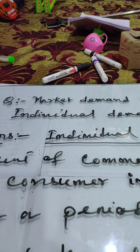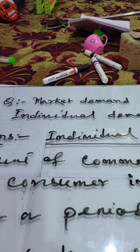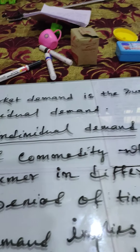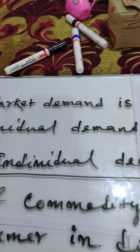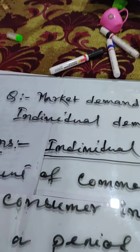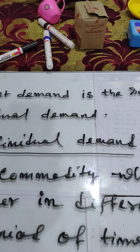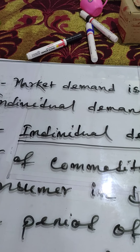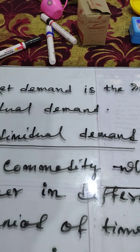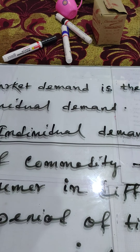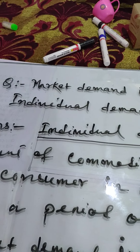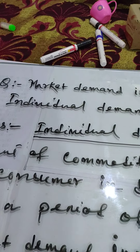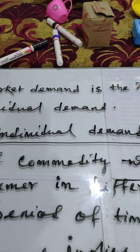I am presenting the topic in question-and-answer format: market demand is the summation of individual demand. This topic is derived from the law of demand. As you know, demand implies the willingness or desire to have some goods backed by purchasing power. The law of demand implies the inverse relationship between the price of a commodity and demand for the commodity.